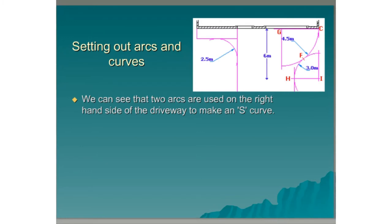We can see that there are two arcs used on the right hand side of the driveway to make the S curve. The 4.5 metre arc has its origin at G and a tangent point with the building at C.